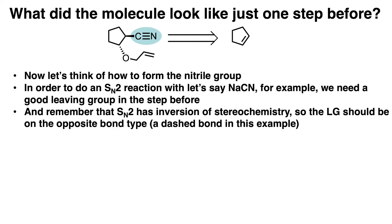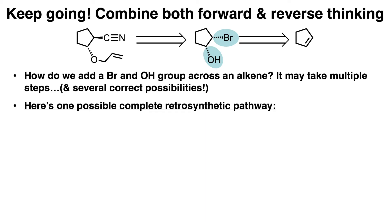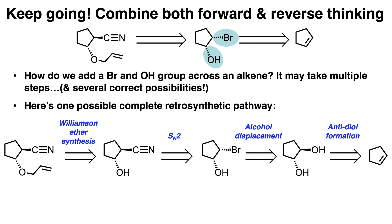Now, continuing going backwards, we'll think about what the molecule looked like just one step before. So let's focus on the nitrile group highlighted in blue. In order to form the nitrile group and do an SN2 reaction with, let's say, NaCN for example, we need a good leaving group in the step before. Also, remember that SN2 has an inversion of stereochemistry, so the leaving group should be on the opposite bond type as the nitrile group. So continuing along in our retrosynthetic pathway, the molecule right before this step could be a bromine leaving group on a dashed bond. How do we add a bromine and an alcohol group across an alkene? It may take multiple steps — an alcohol displacement reaction could be performed to change the alcohol group to a bromine group, and then the step right before that could be an anti-diol formation across the alkene.